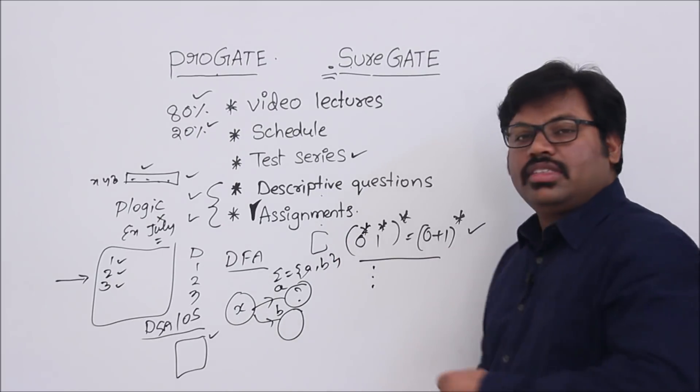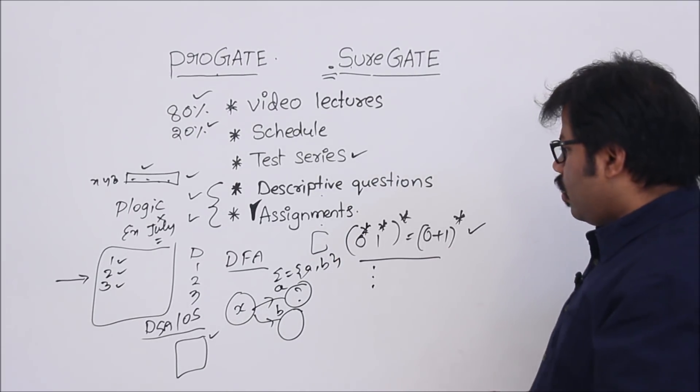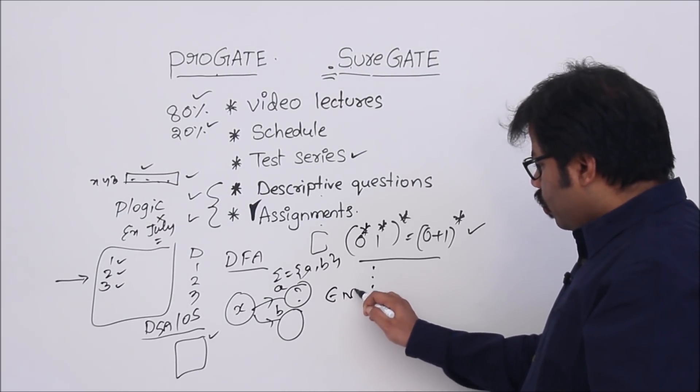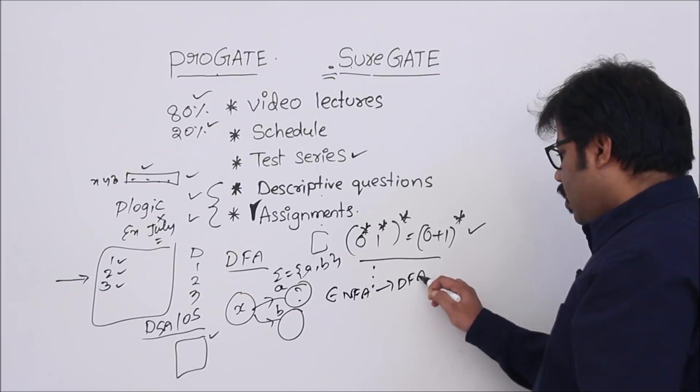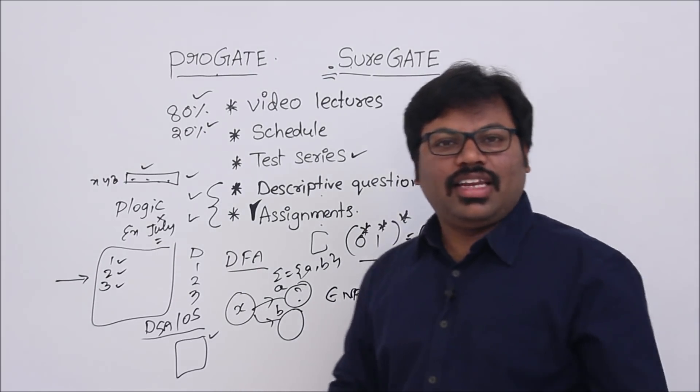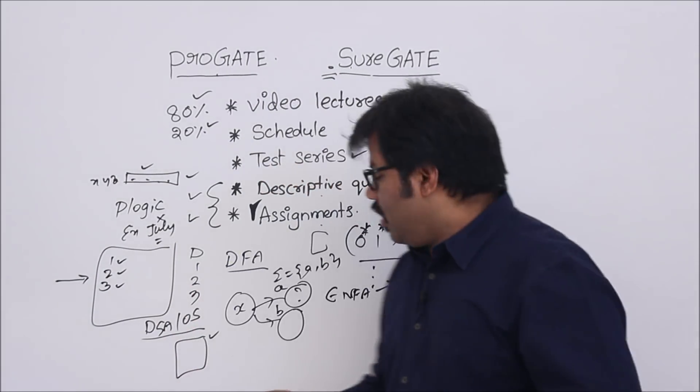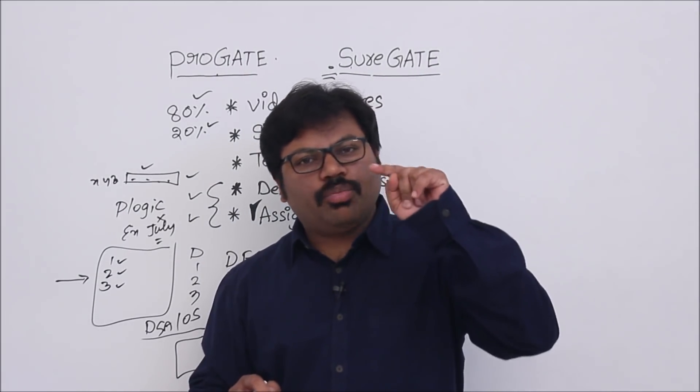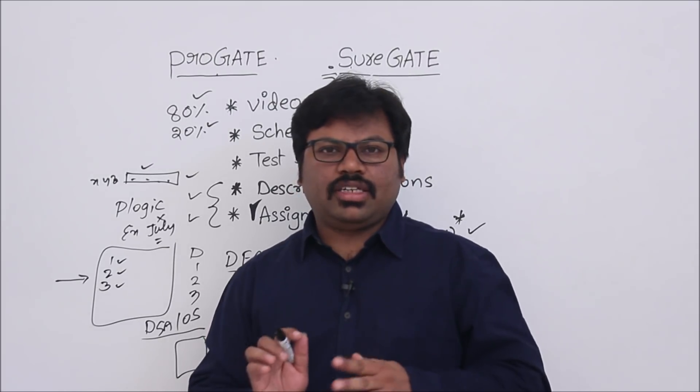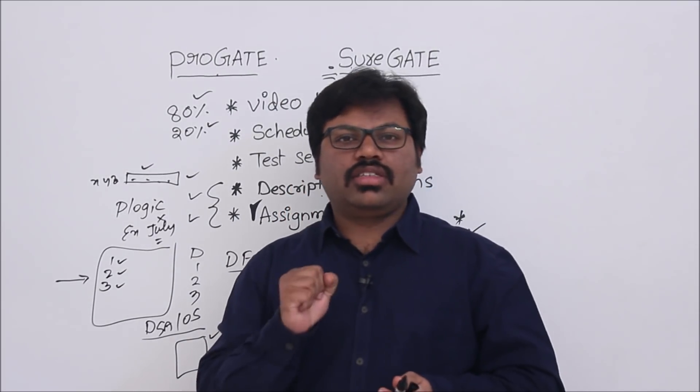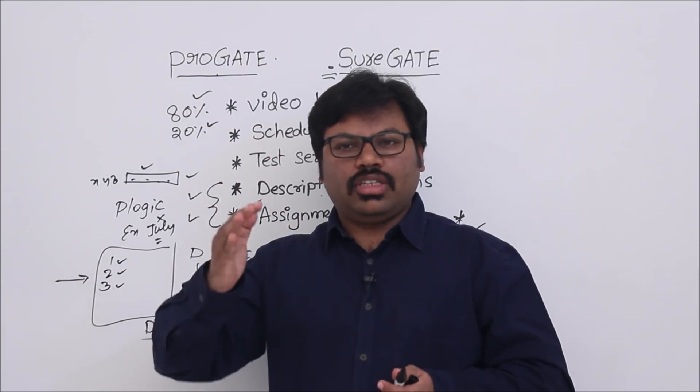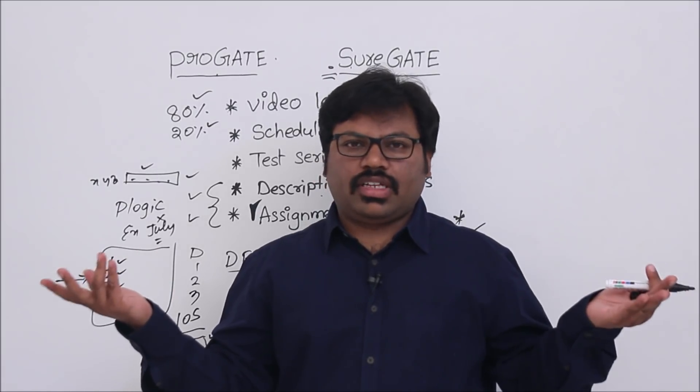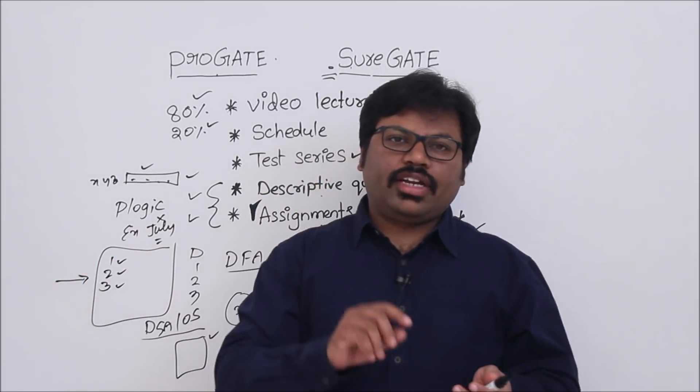I might ask you to convert epsilon NFA to DFA. You know the conversion, so happily you will do that through subset construction. Then I ask: can you prove that this epsilon NFA is equal to DFA? When you do that, that is your real and true preparation. That gives you two important things: confidence will be improved. This is next level preparation. No matter who gets what rank, you are going to get definitely a very good rank. That is guaranteed.